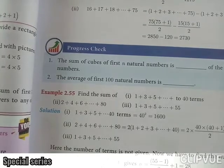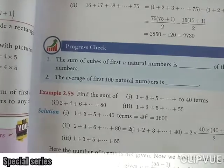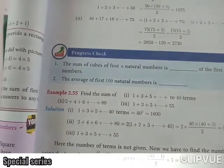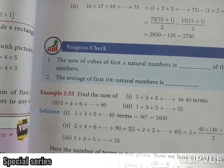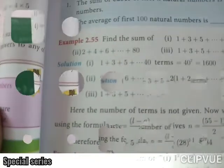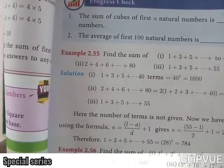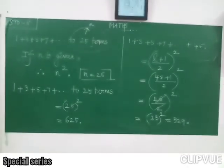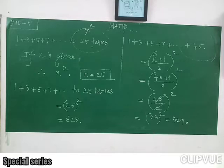Third case: 1 plus 3 plus 5 plus and so on plus 55. What is that 55? That 55 is l, the last term. If the last term is given, we use the formula (l plus 1) by 2, the whole square. Substituting: 55 plus 1 by 2, the whole square — that is 56 by 2, which is 28 square. 28 square value is 784.